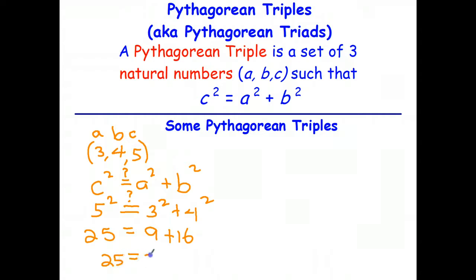And that gives us 25 equals 9 plus 16. And because the left side and the right side are equal, three, four, five is a Pythagorean triad or a Pythagorean triple.